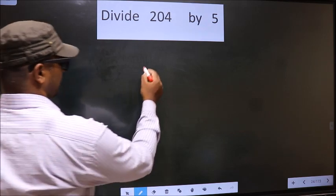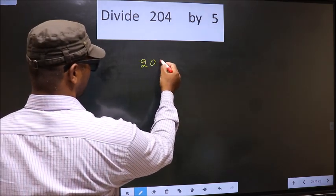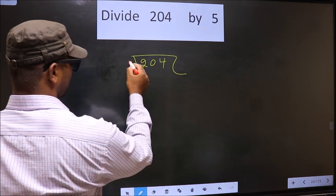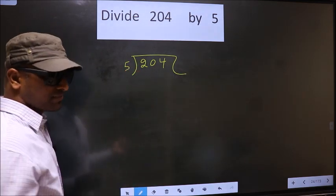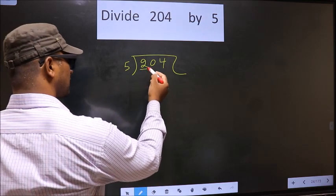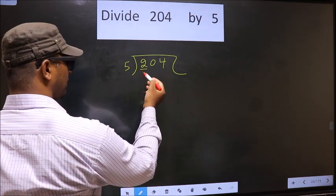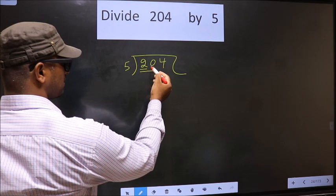See, that is 204, 5 here. Okay, next. Now, here first number is 2, 2 smaller than 5. So, we take two numbers that is 20.